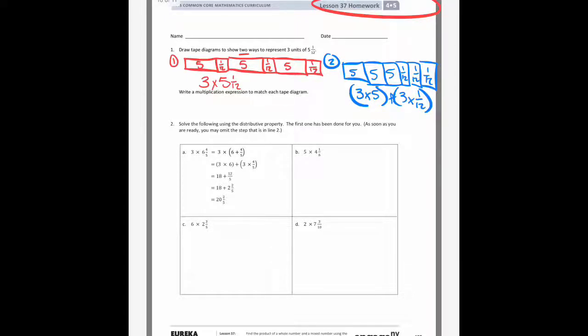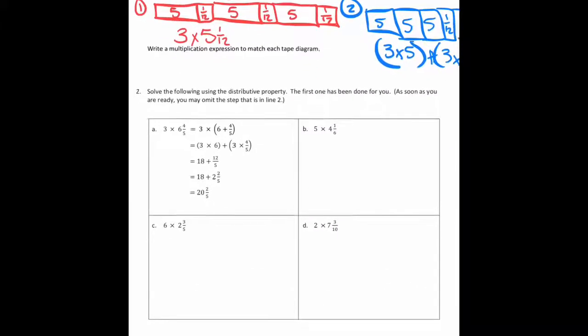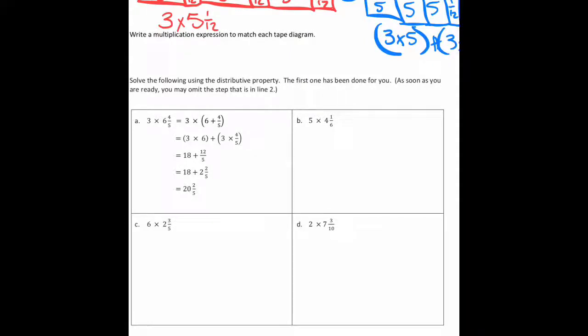Now let's look at number two. They have an example here that shows a lot of steps that you could go through to answer, and there's nothing wrong with doing all those steps, and I would encourage you to do them until you understand why it works so you can make it a little bit shorter. But here, it's starting off with they break up the 6 and 4/5ths into 6 plus 4/5ths, and then they use the distributive property. So they're saying 3 times the 6 by itself, and then 3 times the 4/5ths by itself to make it easier to multiply. And when you do that, 3 times 6 gives you 18. 3 times 4/5ths gives you 12/5ths. They turn the 12/5ths into a mixed number, and then they add them together.